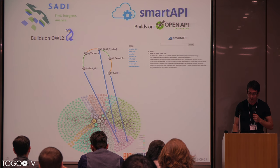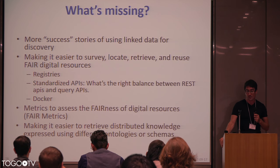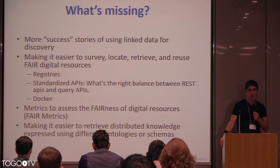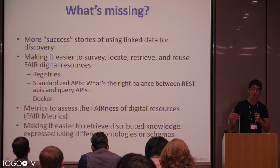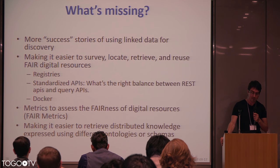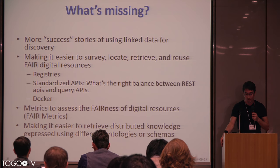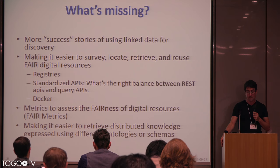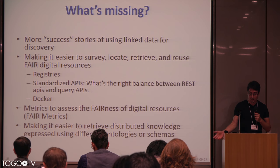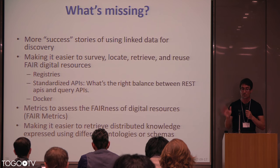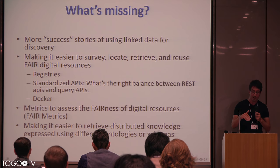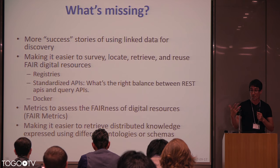What's missing? We definitely need more success stories about linked data for discovery. That's something we can develop, particularly for the 10th anniversary paper following this workshop — collecting use cases of how these technologies have been used in discovery work. We need to make it easier to survey, locate, retrieve, and reuse FAIR digital resources, which means establishing new registries for digital resource content and standardizing APIs. There are ongoing discussions about the balance between REST APIs and query APIs.